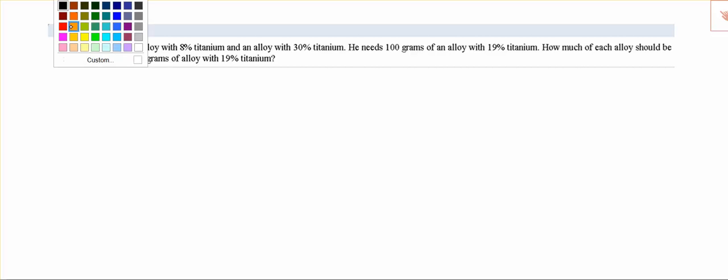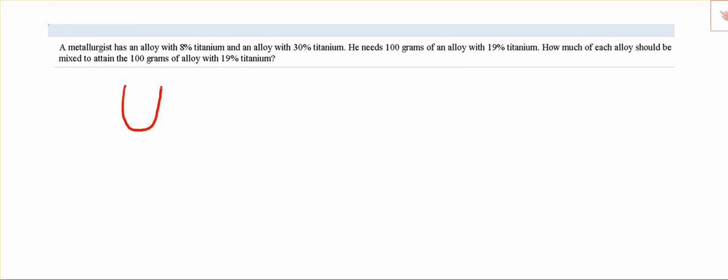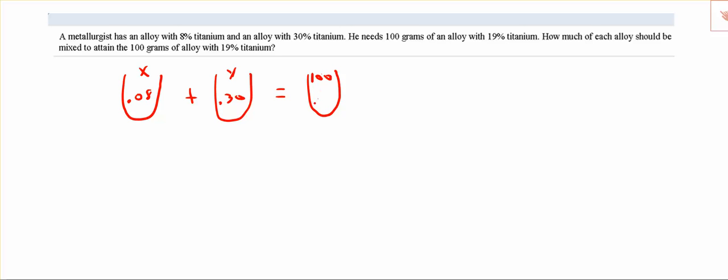First of all, I'm going to have this X container and it has 8% titanium, so that's 0.08. And then I'm going to have another container and it has 30% titanium, so 0.30. Now this added together we want a total of 100 grams. So I have X grams of 8% titanium, Y grams of 30% titanium, and I want 100 grams of 19% titanium.